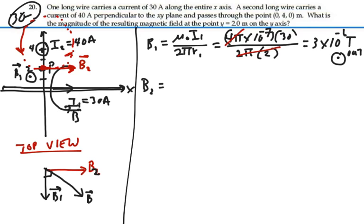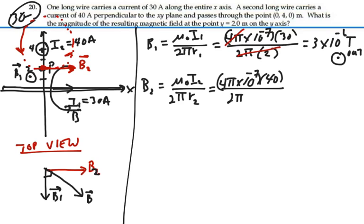Magnetic field 2 is going to be mu-naught I2 over 2 pi R2 for a long, thin wire. And that's going to be 4 pi times 10 to the minus 7 for mu-naught times 40 amps over 2 pi. And the distance we are from that wire is also 2 meters.